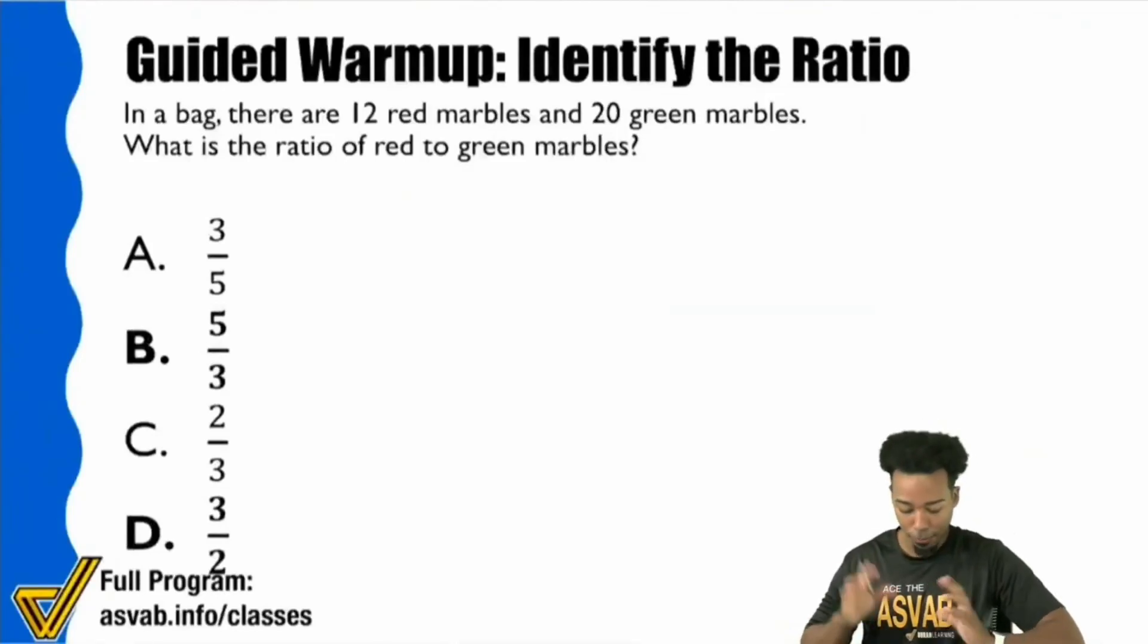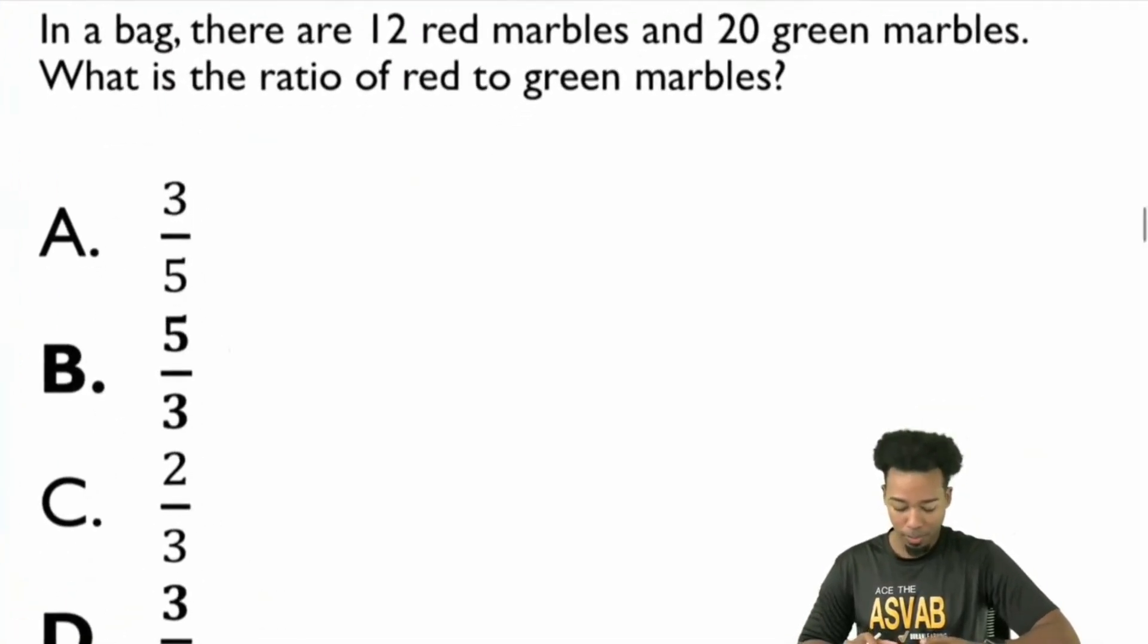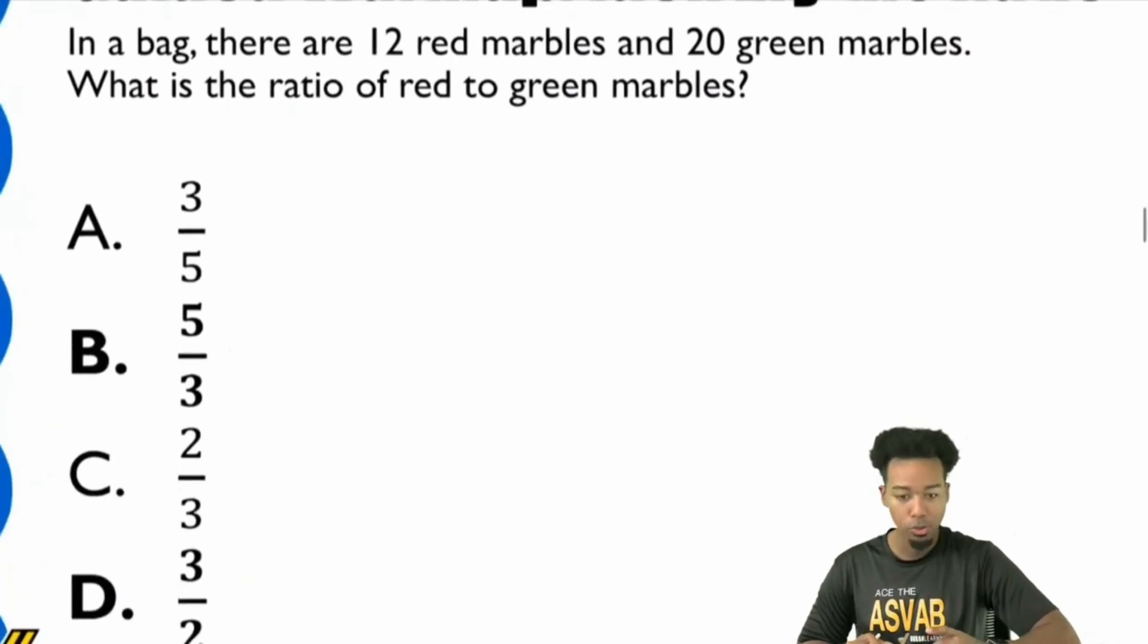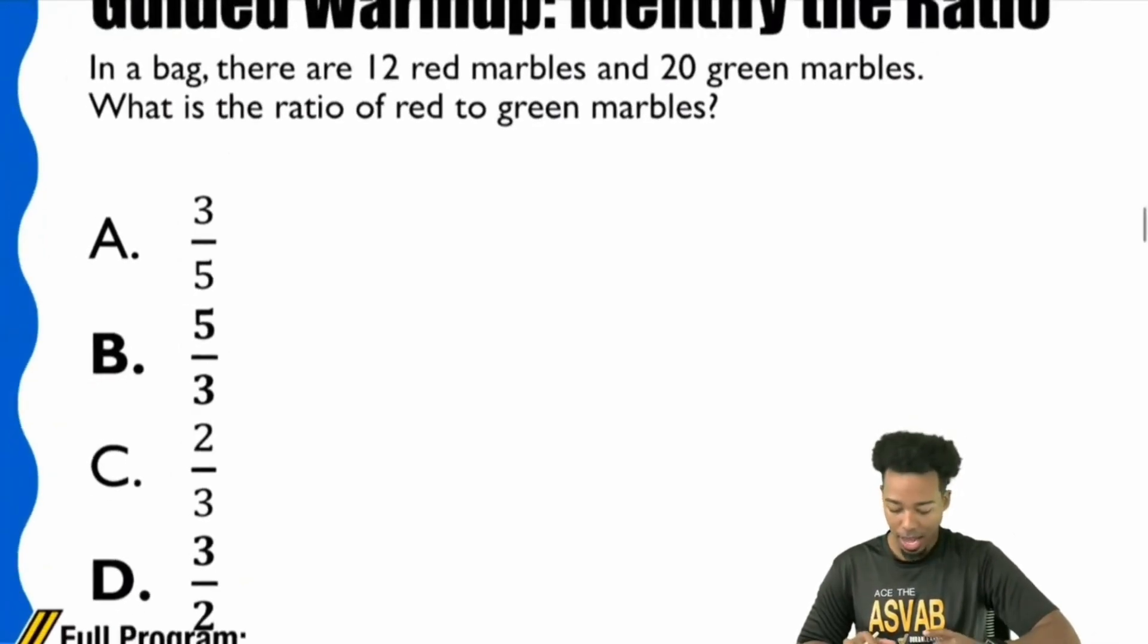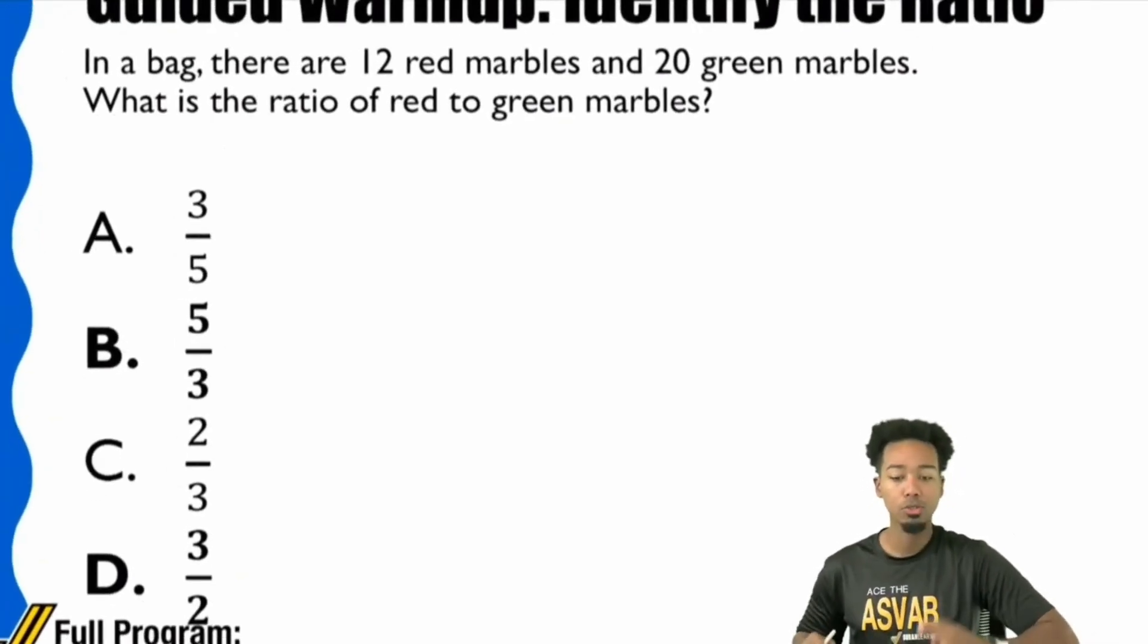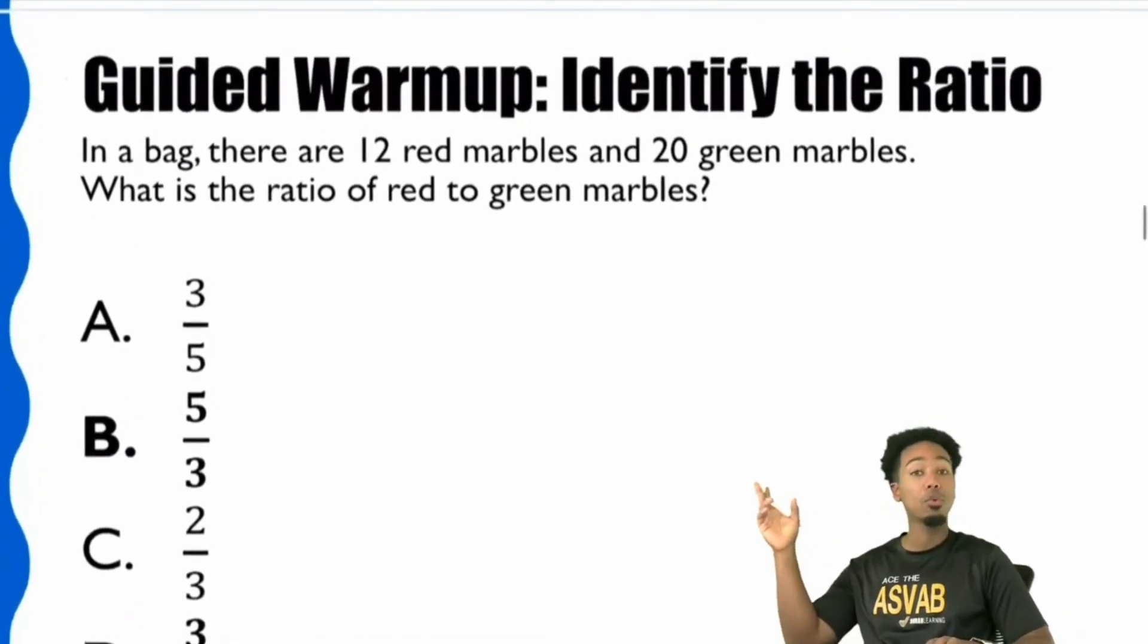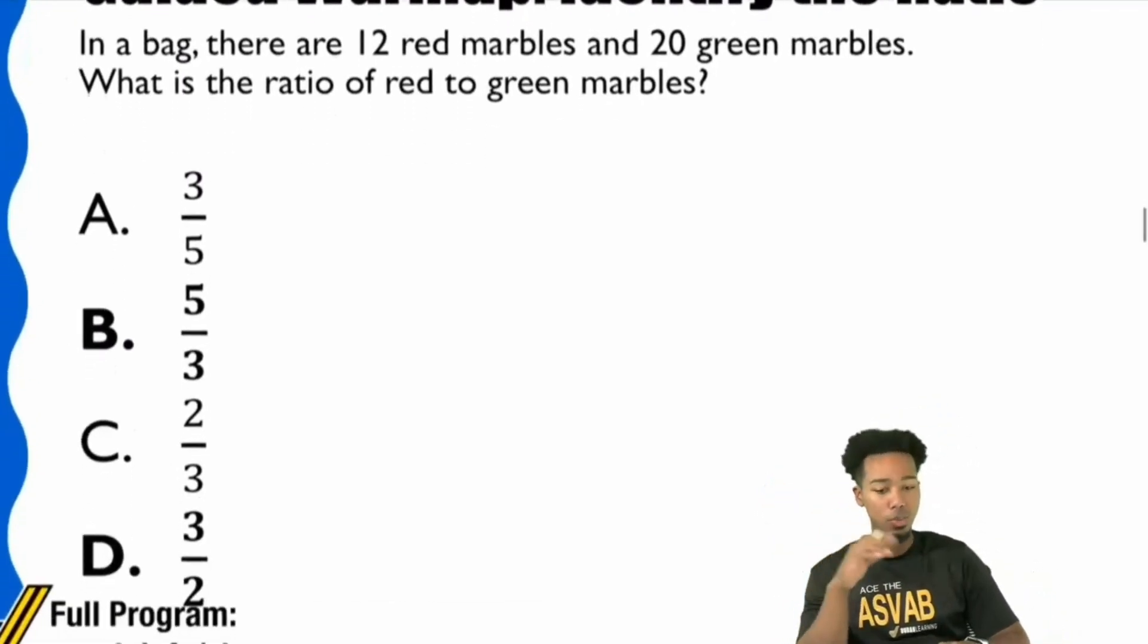Let's get started on this first type of word problem here, simply identifying the ratio. I'm going to zoom in because this is not as big as I would like it to be. This is a guided warmup in a word problem of identifying the ratio.